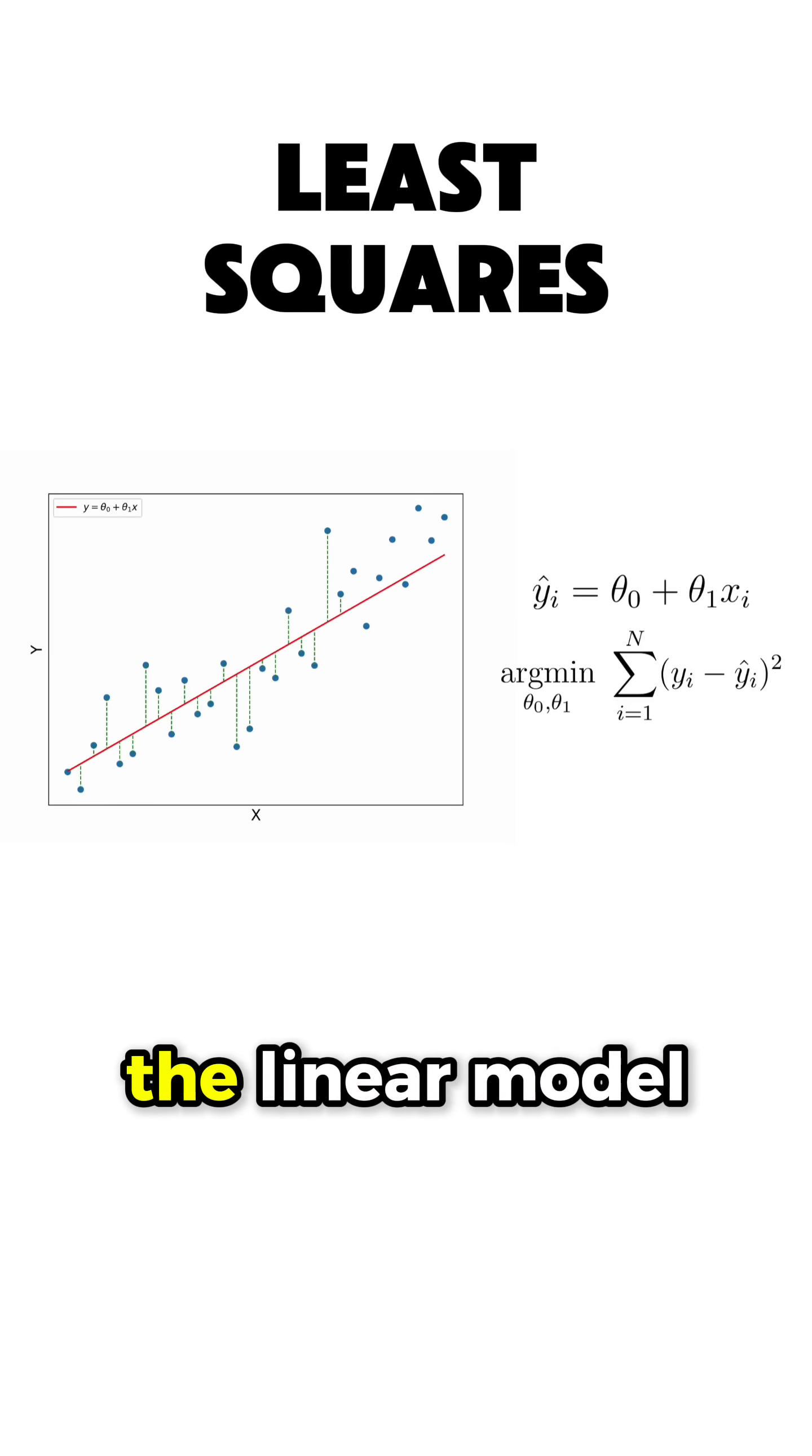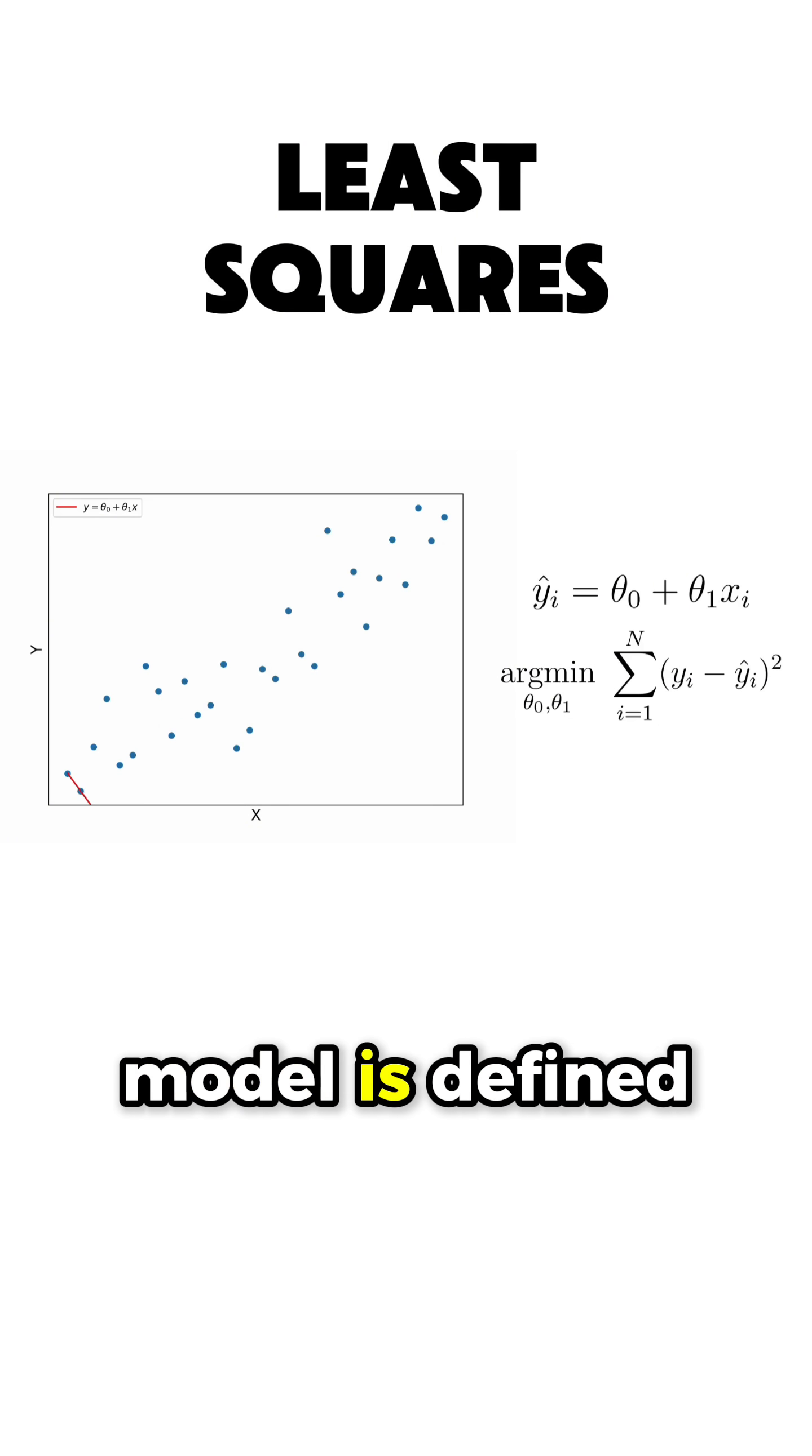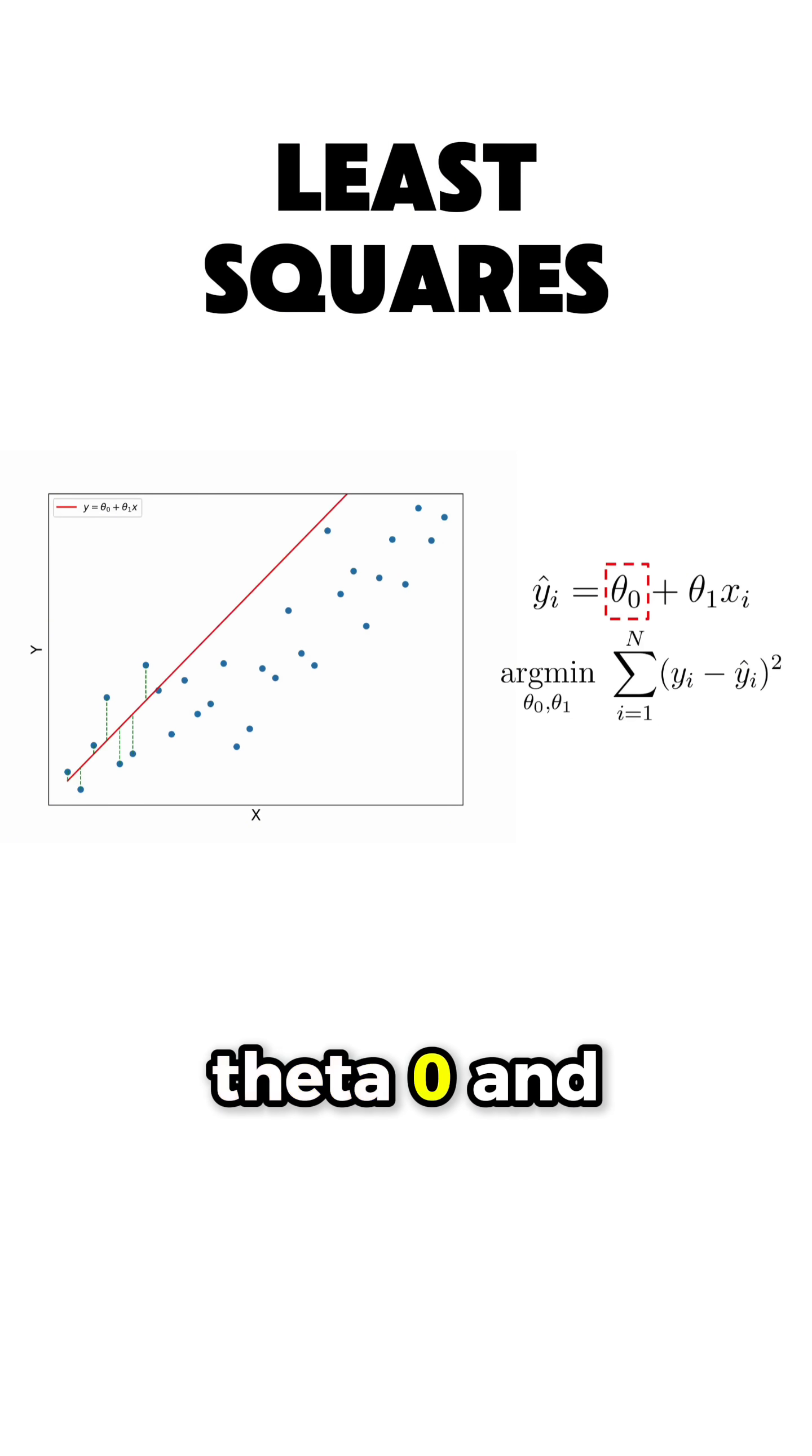Linear regression tries to find the linear model that best fits our data. And the linear model is defined by the intercept theta0 and the slope theta1.